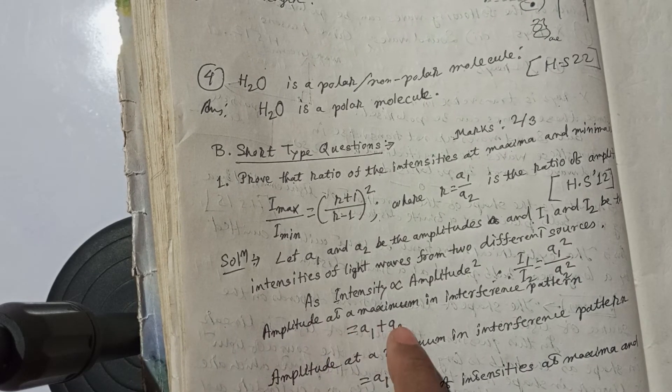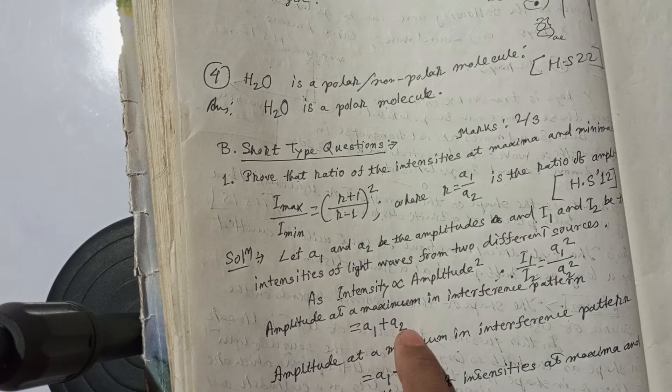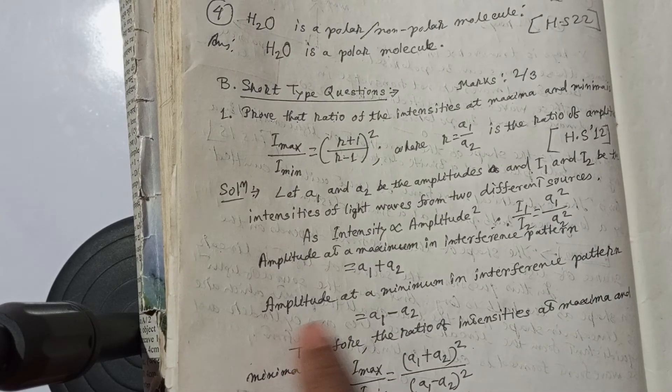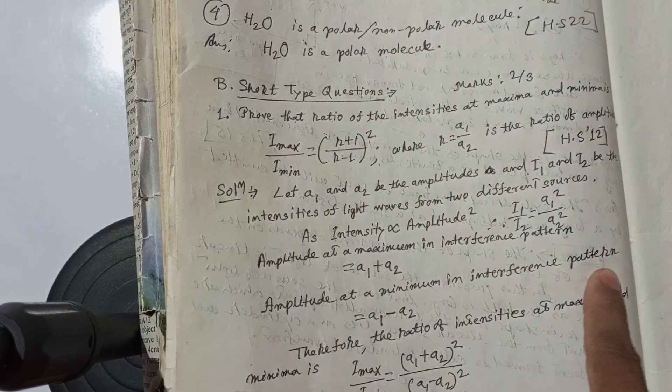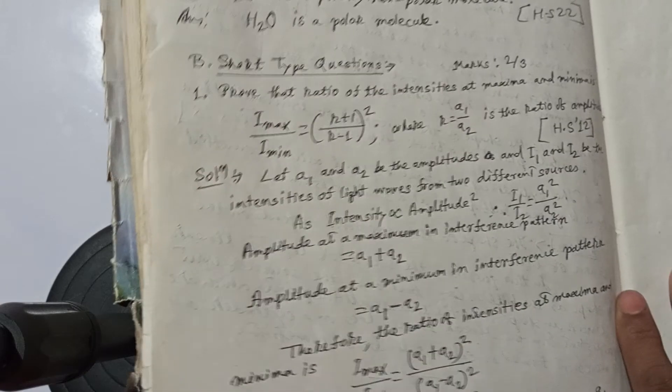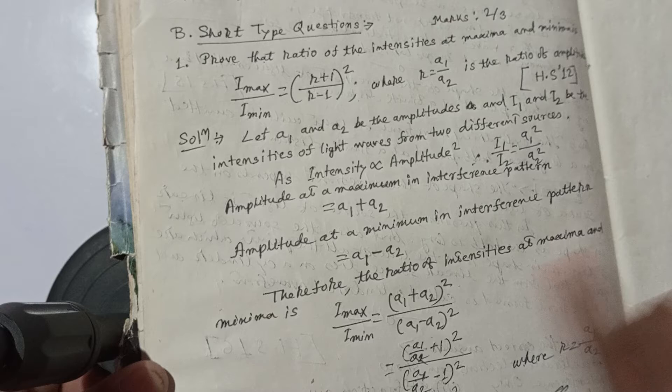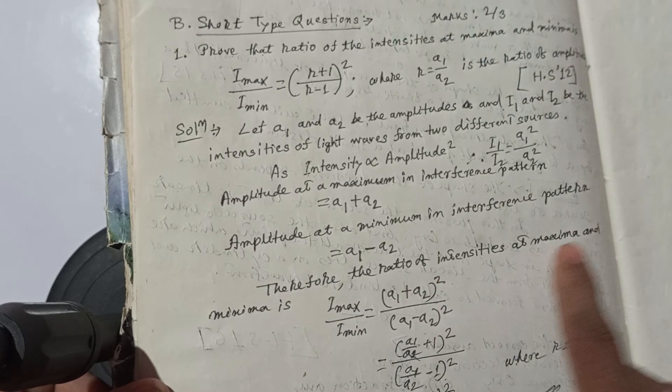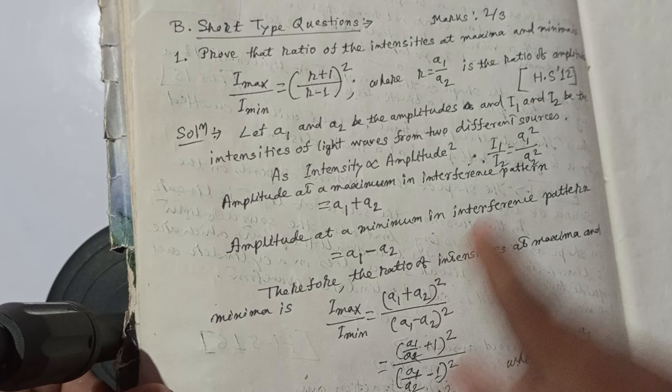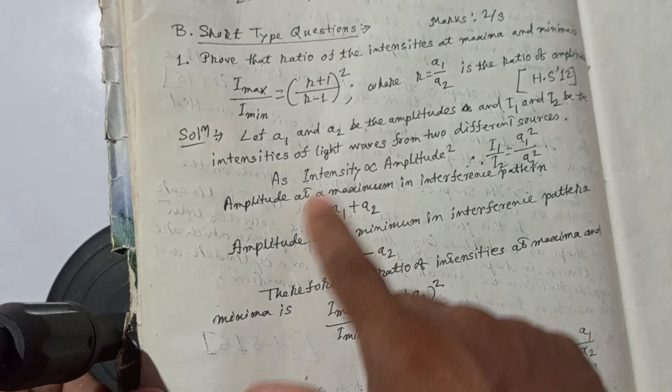Amplitude at maximum is A1 plus A2, and amplitude at minimum is A1 minus A2. Therefore, the ratio of intensity at maximum and minimum is I maximum by I minimum.